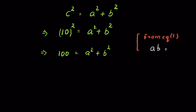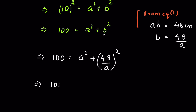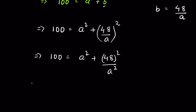From equation 1 we have a×b = 48, or b = 48/a. We substitute the value of b in terms of a into the Pythagorean equation: 100 = a² + (48/a)², which gives 100 = a² + 48²/a². Multiplying both sides by a²: 100a² = a⁴ + 48².